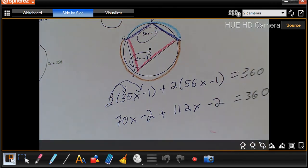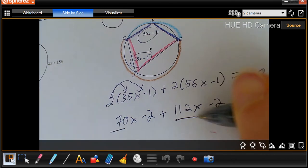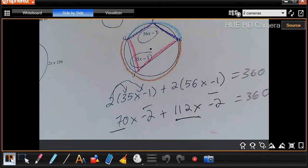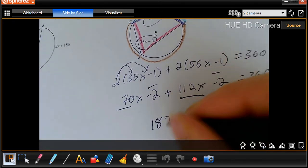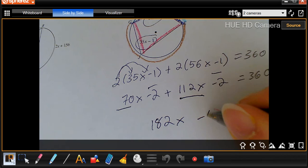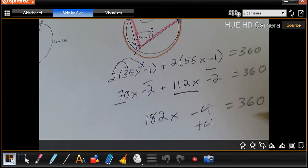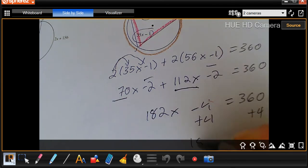Now step 2, combine like terms. These go together. These go together. So 112 plus 70 gives me 182X minus 4 equals 360. I'm going to add 4 to both sides. I get 182X equals 364.